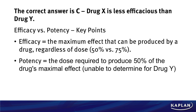Potency, on the other hand, is the dose required to produce 50% of the drug's maximal effect. We were able to determine this for Drug X — they gave it to us, the 20 mg per mil. But for Drug Y, we can't determine it because they didn't tell us what dose of Drug Y brought it up to 50% of the maximum effect. It only said that 40 mg per mil brings maximum resistance to 75%, so we'd need to know what it was at 50% for Y to talk about potency.